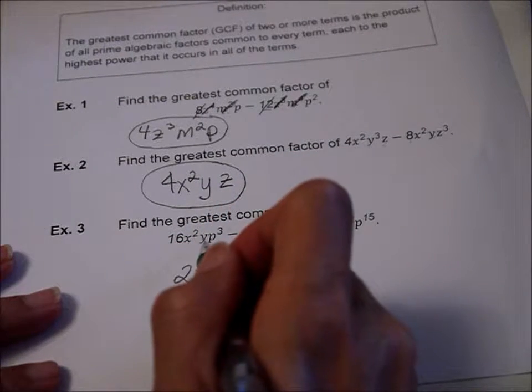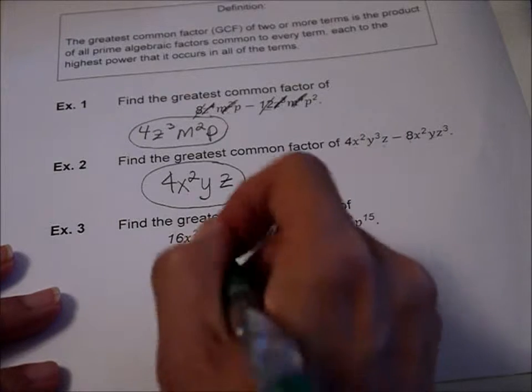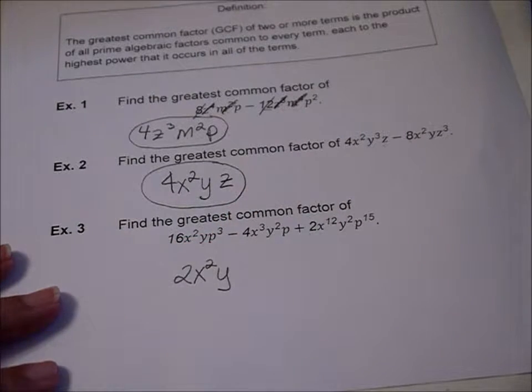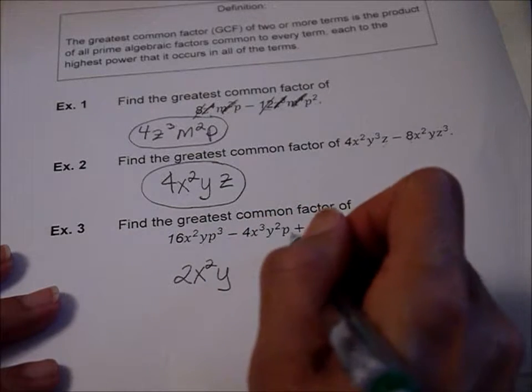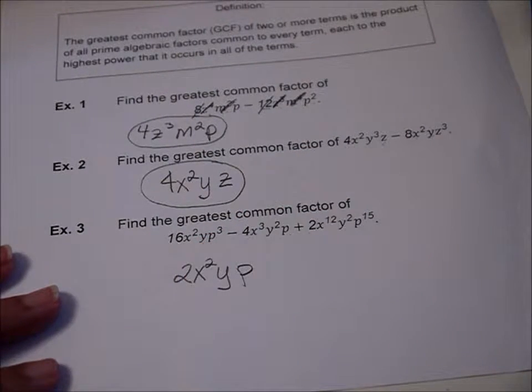Now we look at y. y to the 1, or y to the 1st power. So we just write y is the biggest thing that goes into each of those. And p is just a p, is the answer to that. Turn the page.